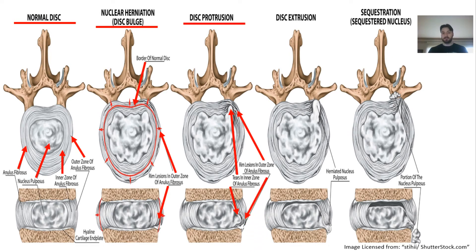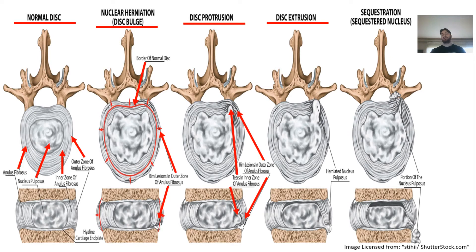Moving on to disc extrusion. When we refer to the term 'extruding,' it means forcing something out. This can be very similar to a protrusion or bulge as well. But for the purpose of this video, we'll clearly define it as a non-contained herniation — meaning that nucleus in the center has ripped through the whole annulus. It's gone through all the layers and completely disrupted the annulus and moved outwards. We have a complete tear on one side or one portion of the annulus, which we'll refer to as a disc extrusion — you're forcing that nucleus material outwards.